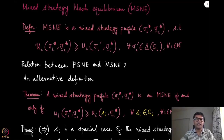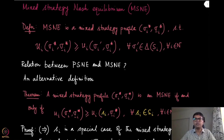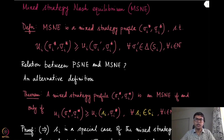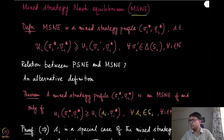We have defined the mixed strategy in the previous module, which means that a mixed strategy is a probability distribution over all the pure strategies that a player has. So in some sense, probabilistically you are mixing all the strategies — that's why the name mixed strategy. Now once we have developed the notion of mixed strategy, it is also very natural to ask about the equilibrium notion. The equilibrium we are going to discuss is called the mixed strategy Nash equilibrium, or MSNE in short.